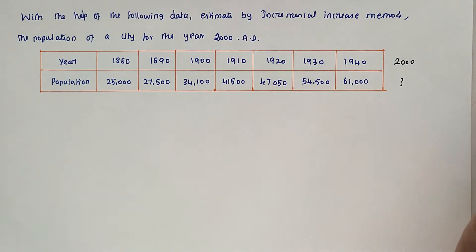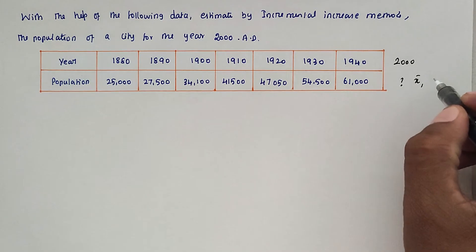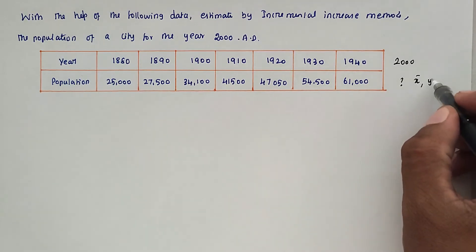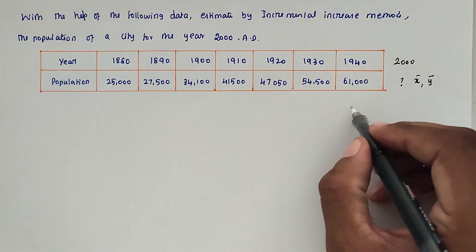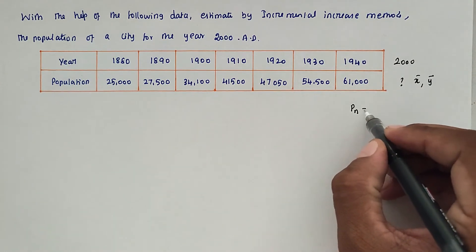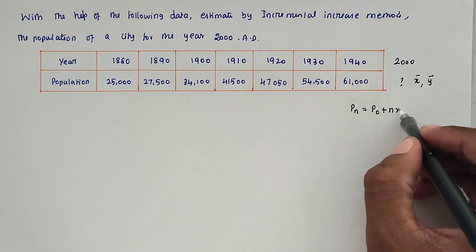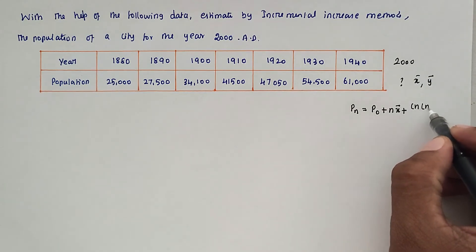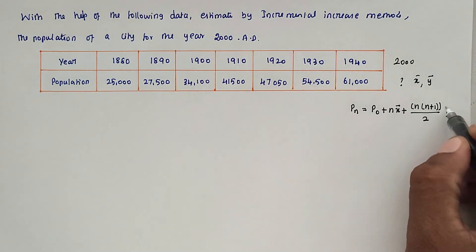To find the expected population, we need to find the average increase per decade, that is x̄, and the average of the net incremental increase, that is ȳ. The formula used is: Pn = P₀ + n·x̄ + [n(n+1)/2]·ȳ.